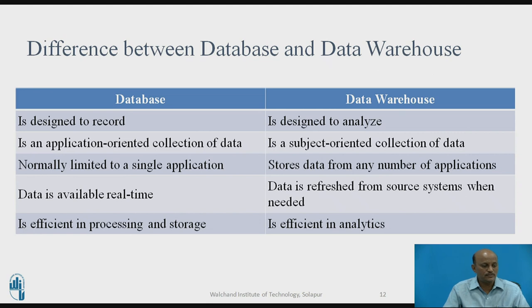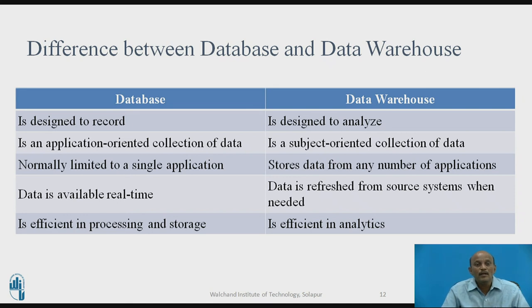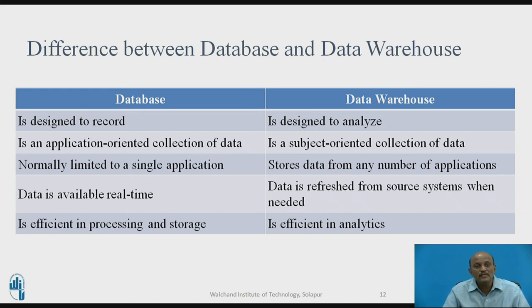Now let us identify the differences between database and data warehouse. First, data in a database is designed to record, whereas in a data warehouse it is designed to analyze. Second, a database is an application-oriented collection of data, whereas a data warehouse is a subject-oriented collection of data. Third, a database is normally limited to a single application, whereas a data warehouse supports multiple applications. Fourth, a database operates in real time, whereas data in a data warehouse is refreshed as per requirement. Finally, a database is efficient in processing and storage, while a data warehouse is efficient in analytics.